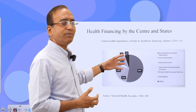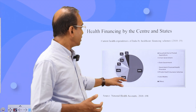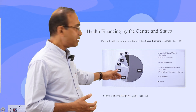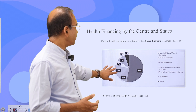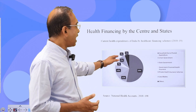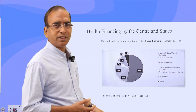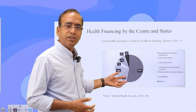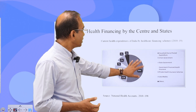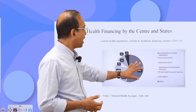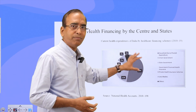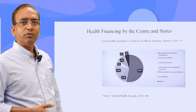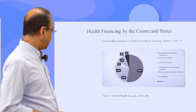At the same time, central government expenditures are 11%, state government expenditures are 14%, and then there are local governments, private sectors, NGOs, and other investments. The major concern is the large spending by households, which we call out-of-pocket expenditure.